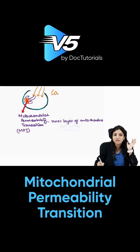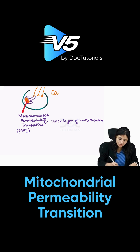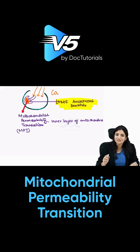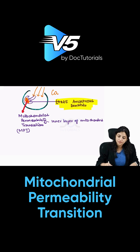The formation of mitochondrial permeability transition increases the permeability of the mitochondria and causes profound mitochondrial dysfunction. This leads to the formation of large amorphous densities in the mitochondria. Once you see large amorphous densities in the mitochondria, that means there has been mitochondrial dysfunction and this cell is going to die by necrosis.